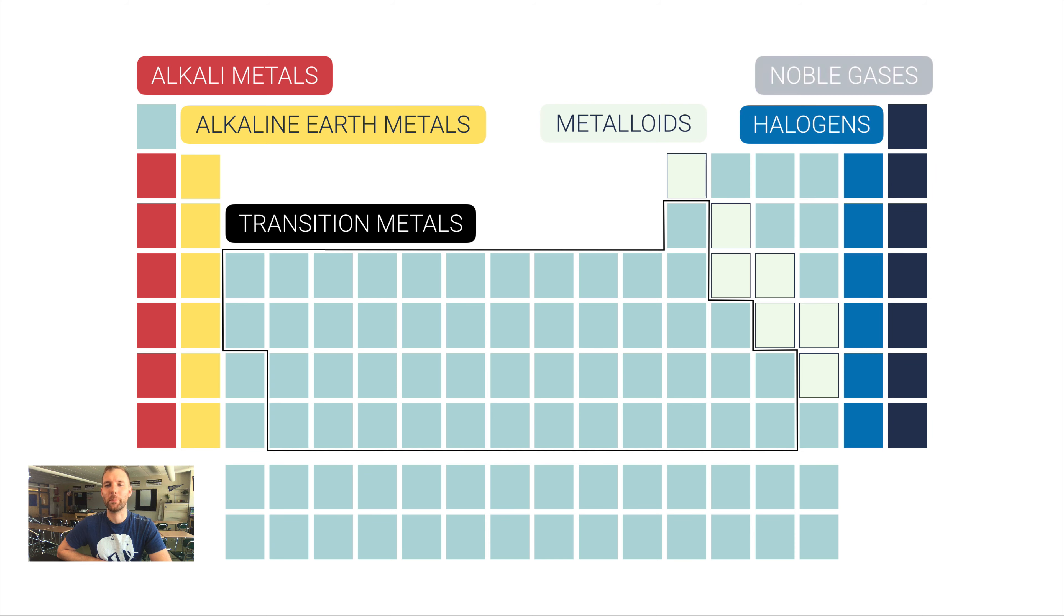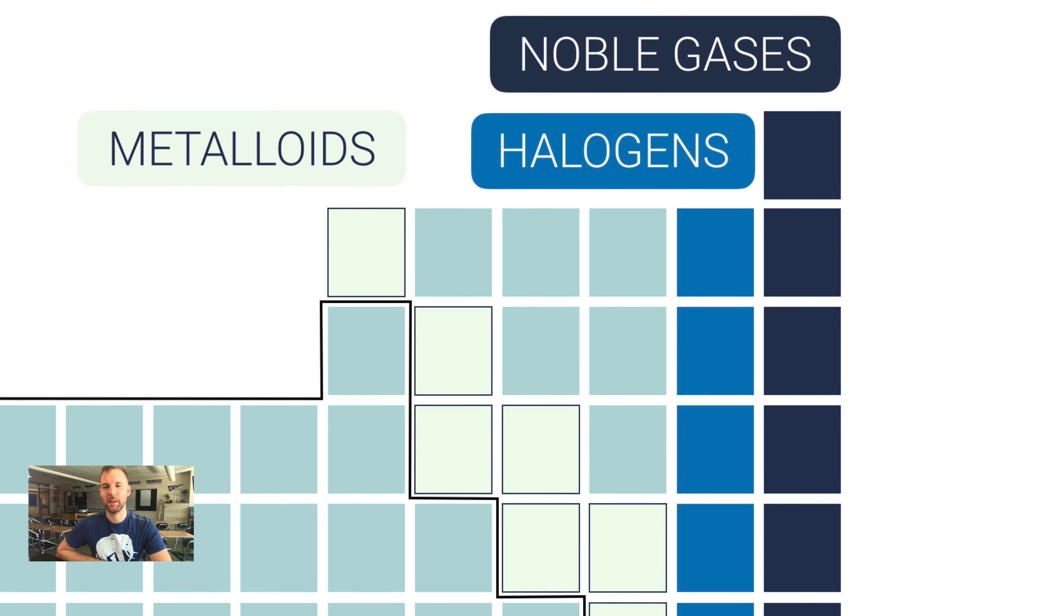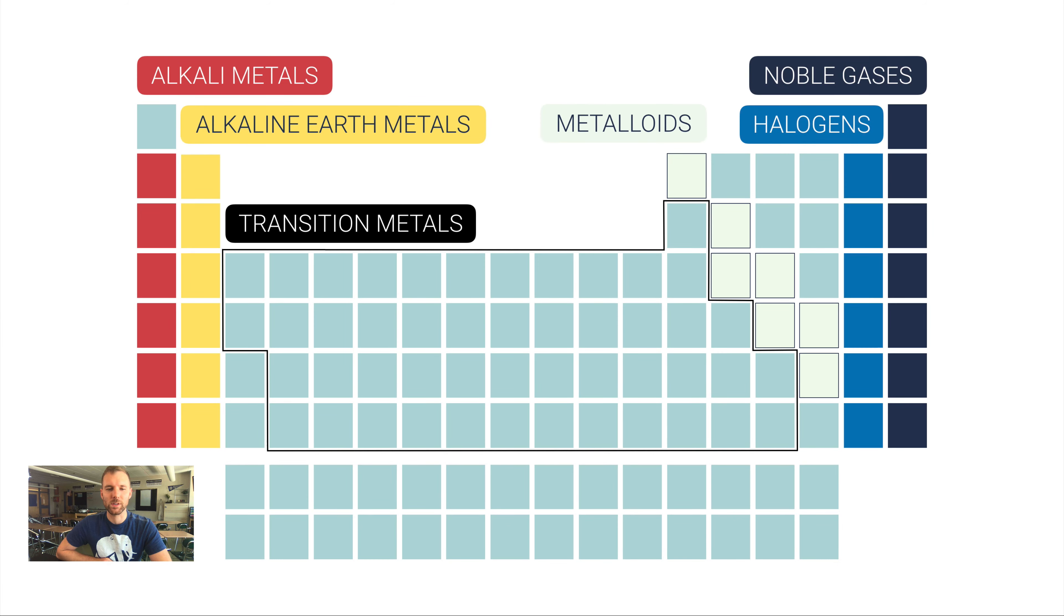Group 17, all of those elements are called halogens. And then group 18, all of those elements are called noble gases. In this little section here, these six elements, those are all non-metals as well. Each of these groups technically have a name, but they're just not as commonly grouped together.